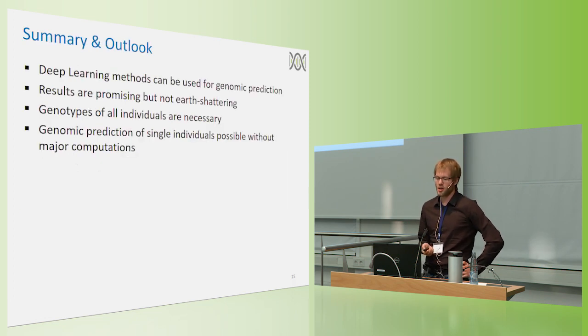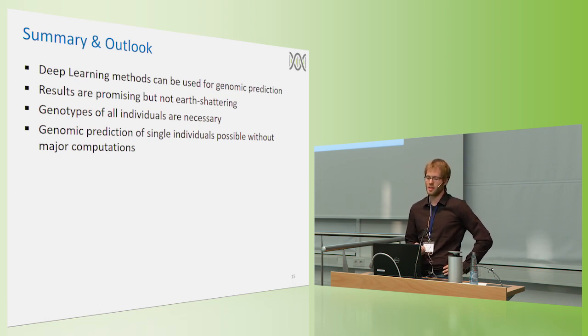As a general outlook, I would say that deep learning is definitely a method that can be used for genomic prediction, but the results are not, so far, really earth-shattering, but at least promising. And some of the things to note here is, in deep learning methods, you really need phenotypes or the same input variable for all individuals. But the possible advantage would be, when doing genomic prediction, that it's quite easy to incorporate a couple of new individuals in the model without doing major computations.